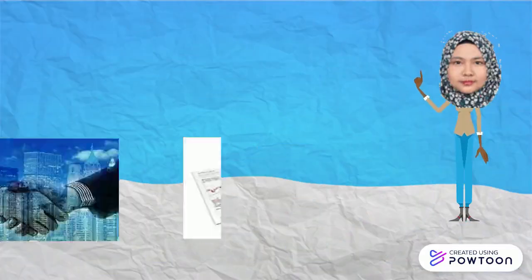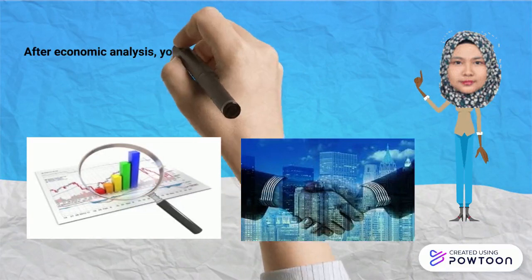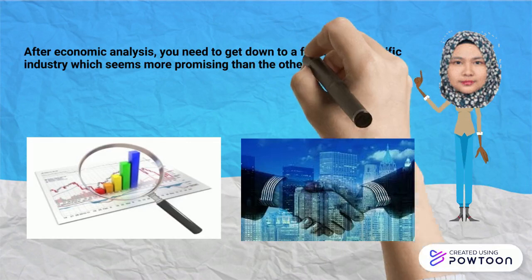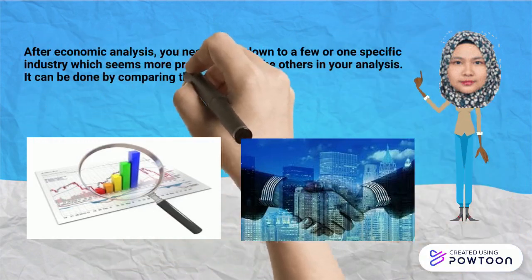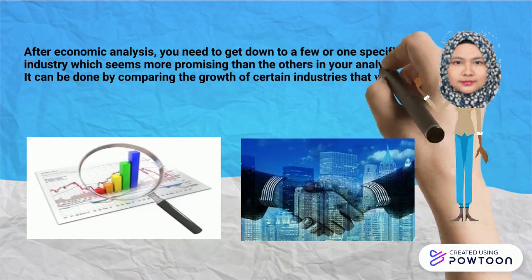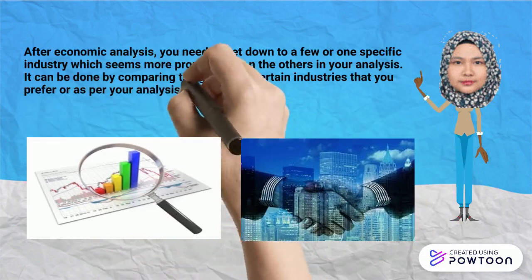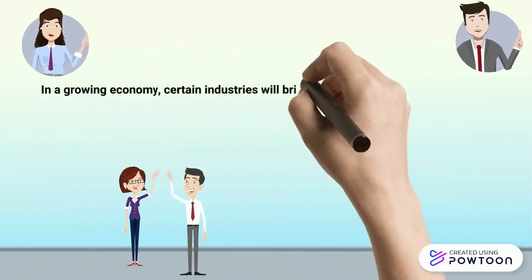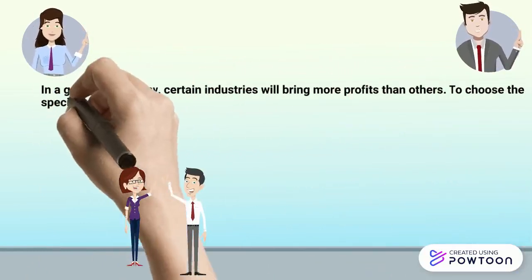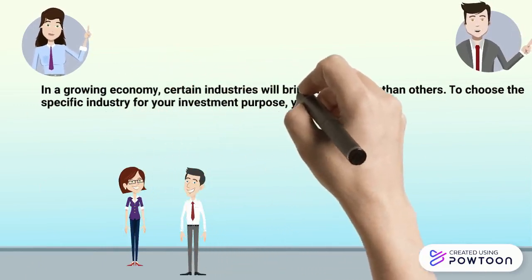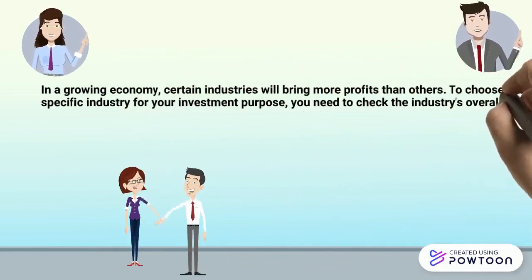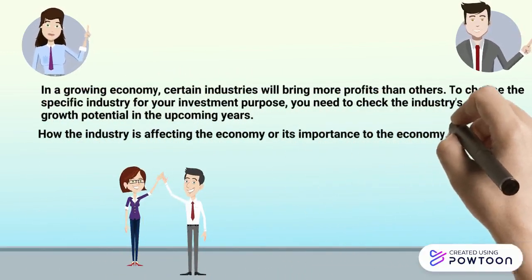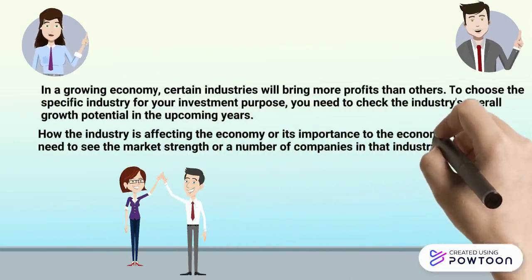After economic analysis, you need to get down to a few or one specific industry which seem more promising than the others in your analysis. It can be done by comparing the growth of a certain industry that you prefer or as per your analysis. In a growing economy, certain industries will bring more profits than others. To choose the specific industry for investment purposes, you need to check the industry's overall growth potential in the upcoming years, how the industry is affecting the economy or is important to the economy, and then you need to see the market strength or number of companies.